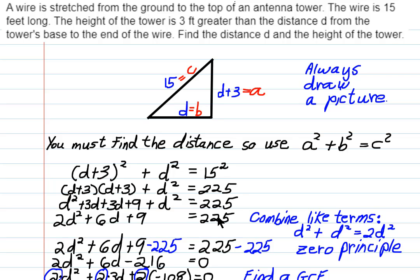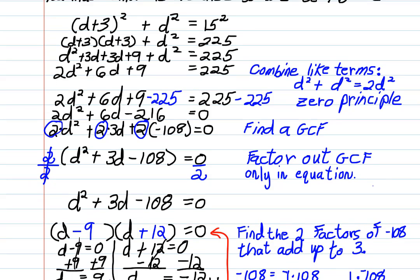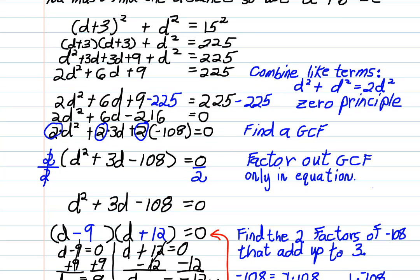Now from here, we can't solve this yet. We have to use the principle of zeros. That means I have to have a zero over here, not 225. That's what the zero principle is, or the principle of zeros. So to get a zero over here, I have to subtract 225 from both sides. Now over here on the right, 225 minus 225 is 0. Over here on the left, I'll have 2d squared plus 6d plus 9 minus 225 is minus 216.